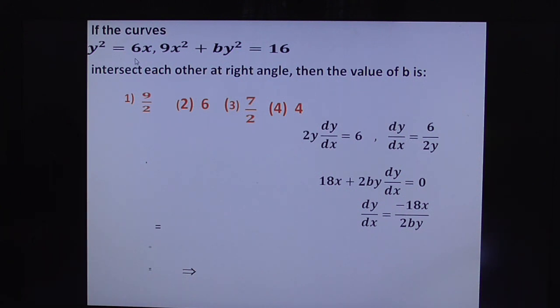We got slopes of the first curve and second curve. These two curves intersect orthogonally, so M₁·M₂ = -1. At point P(x₁, y₁), substitute to get M₁ and M₂. So 6/(2y₁) times -9x₁/(by₁) = -1.